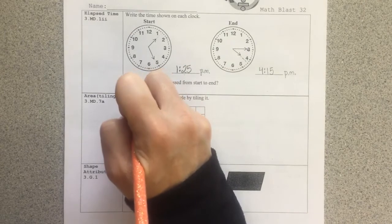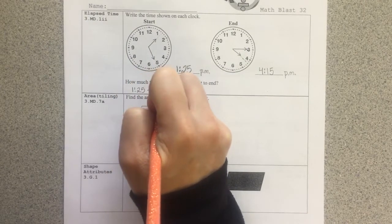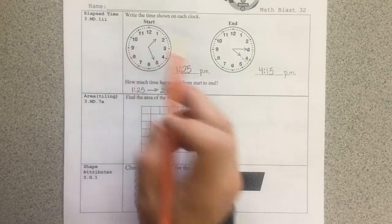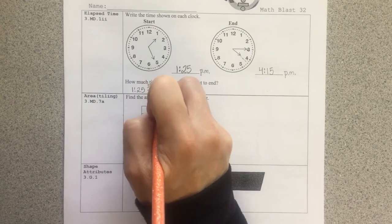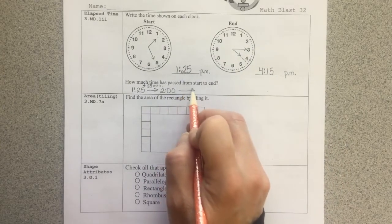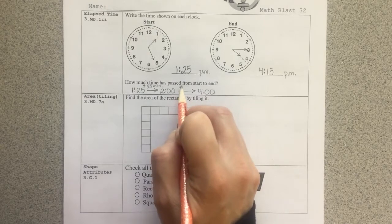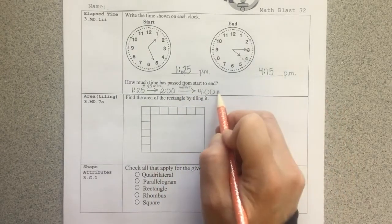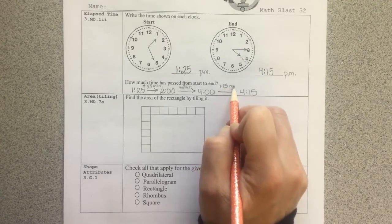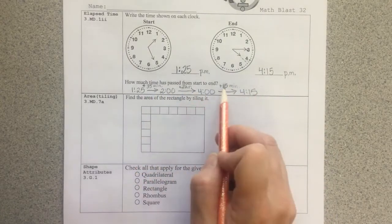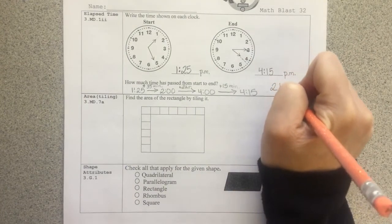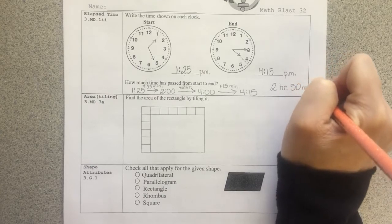I am going to start at 1:25 to get to the next hour, which would be 2 o'clock. I see that I would go 5, 10, 15, 20, 25, 30, 35 minutes. So we're adding on 35 minutes. Now to get from 2 o'clock to 4 o'clock, I'm adding on 2 hours. Now I'm not at my end time yet. I want to get to 4:15. So to get to 4:15, we're adding on 15 more minutes. Now I can add up all the parts here. I have 35 minutes and 15 minutes, which is 50 minutes. And I have 2 hours. So 2 hours and 50 minutes is the elapsed time.